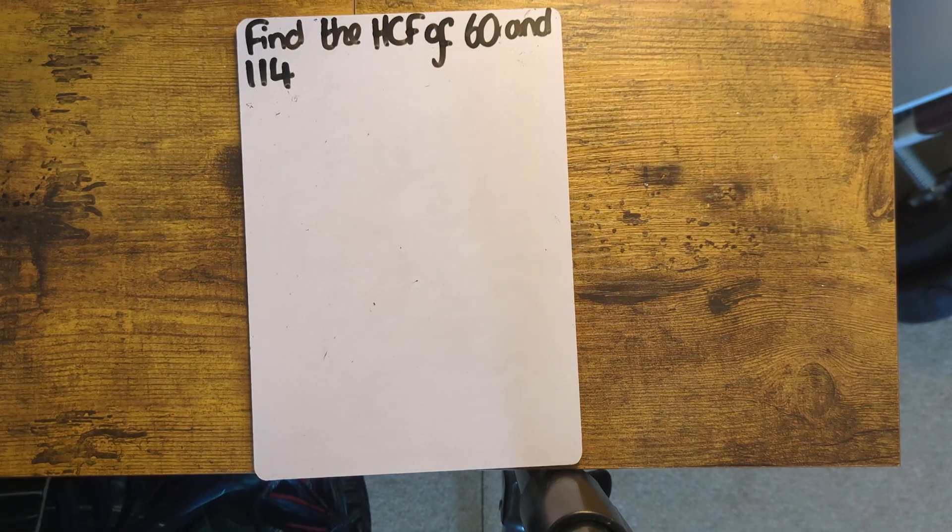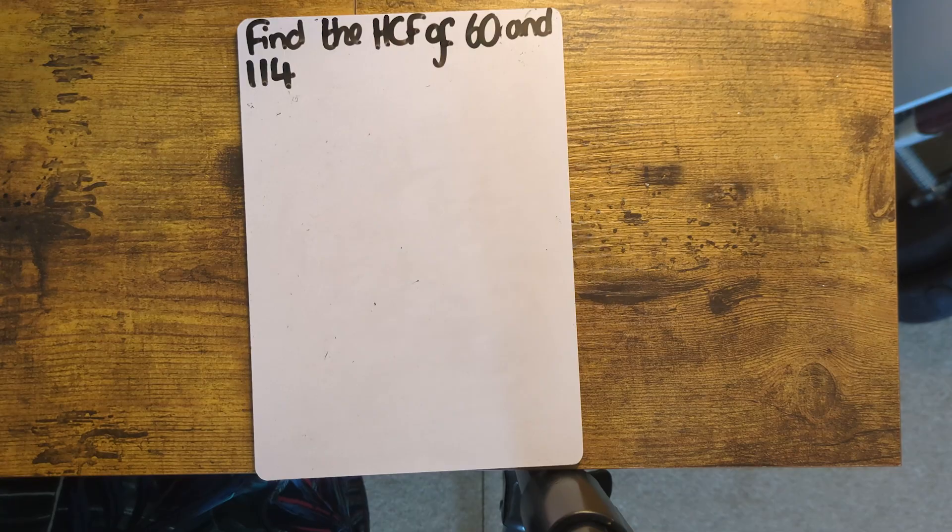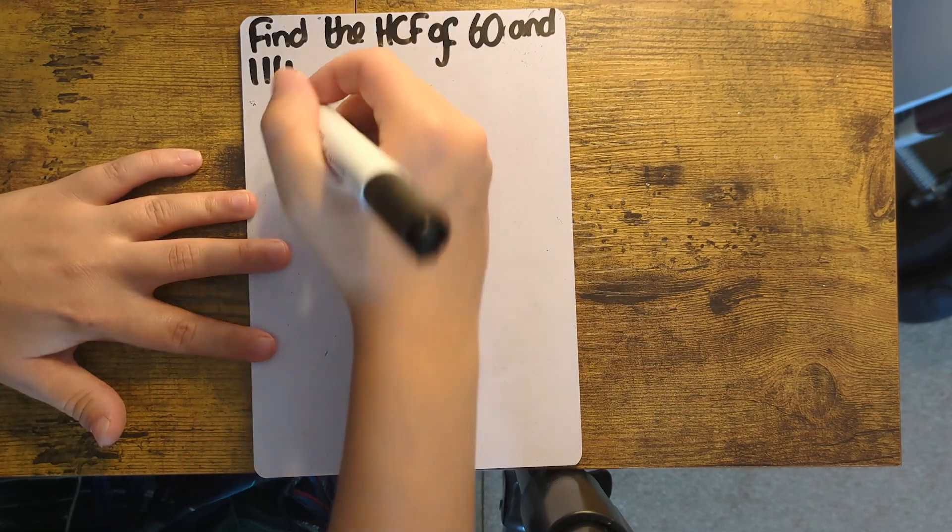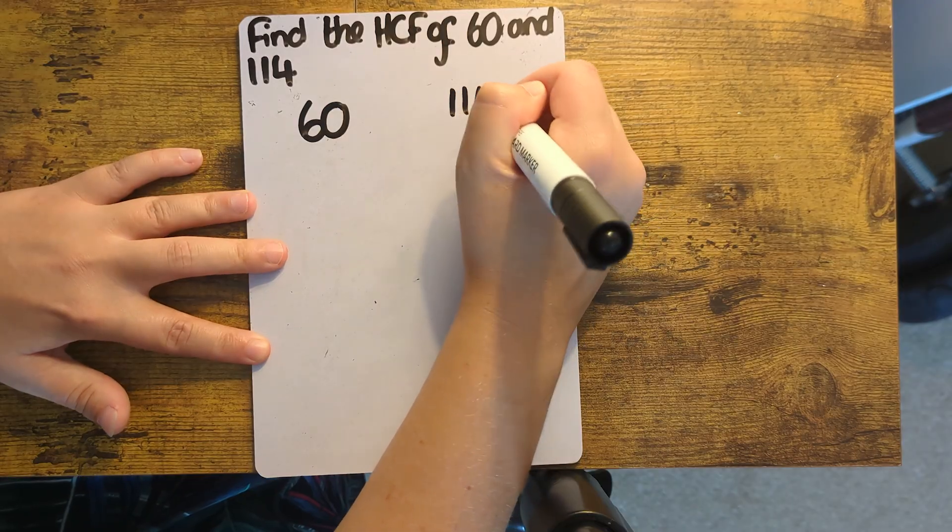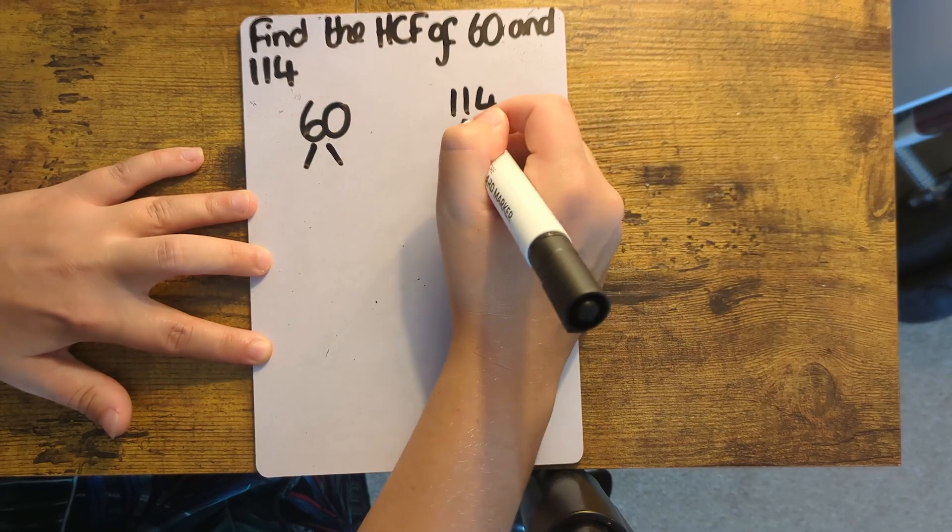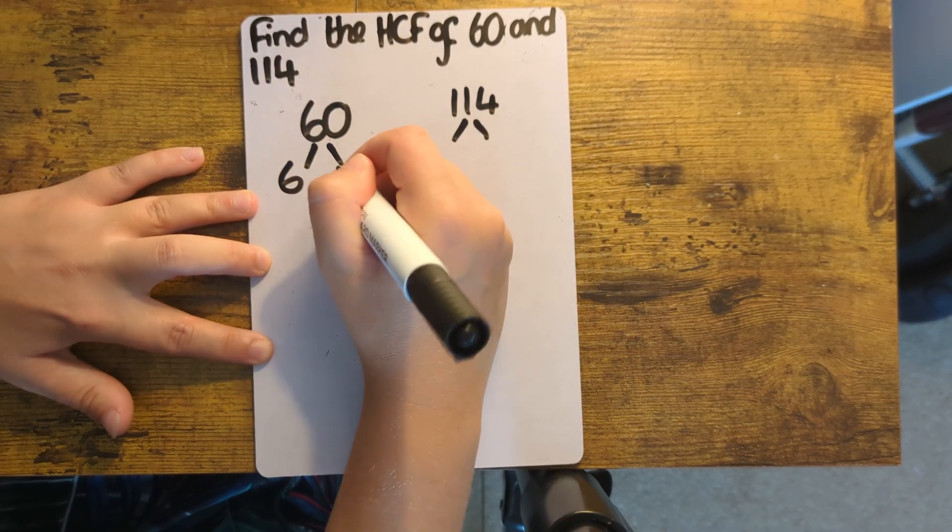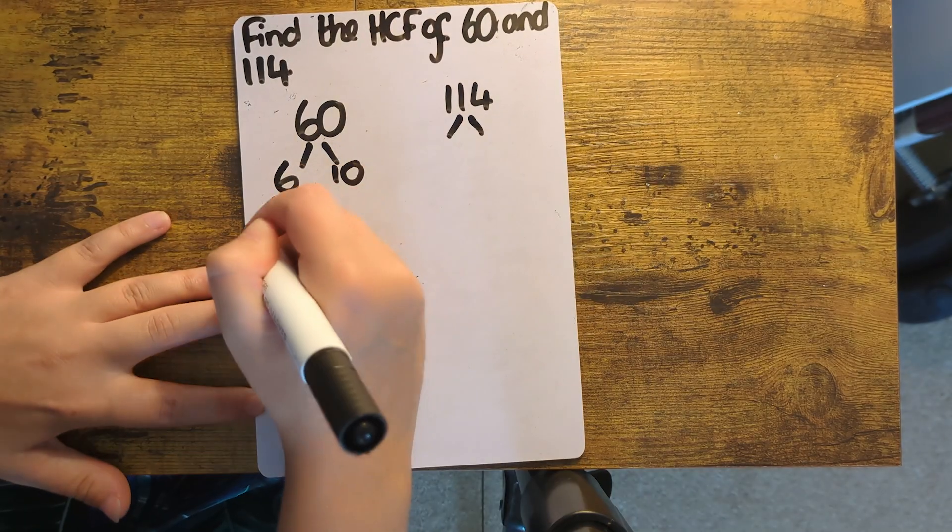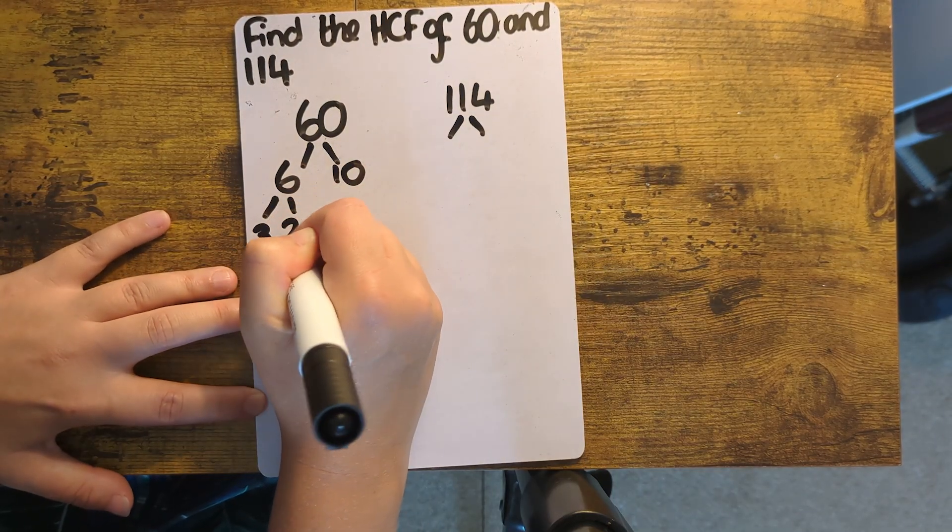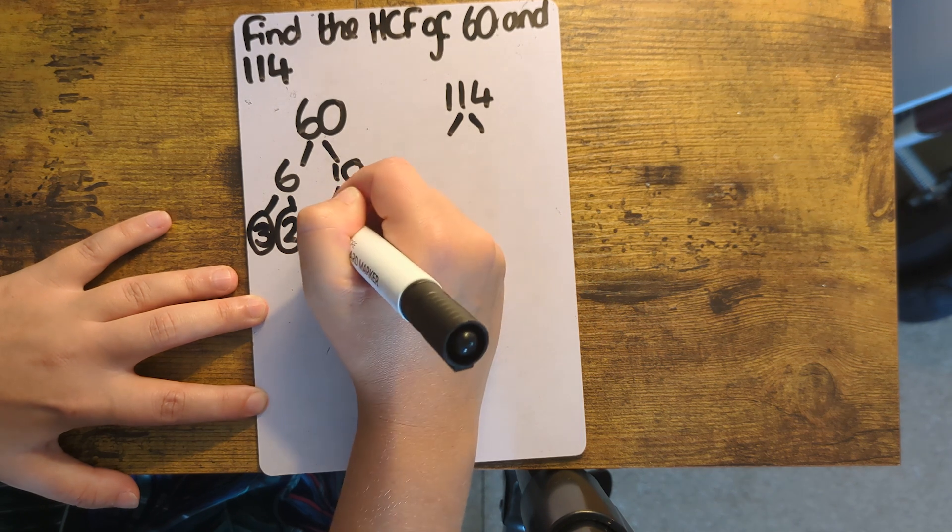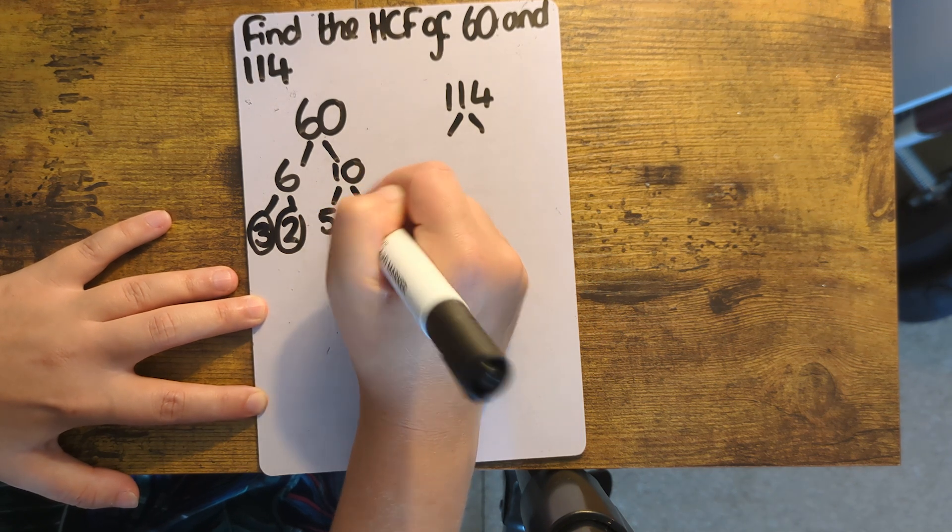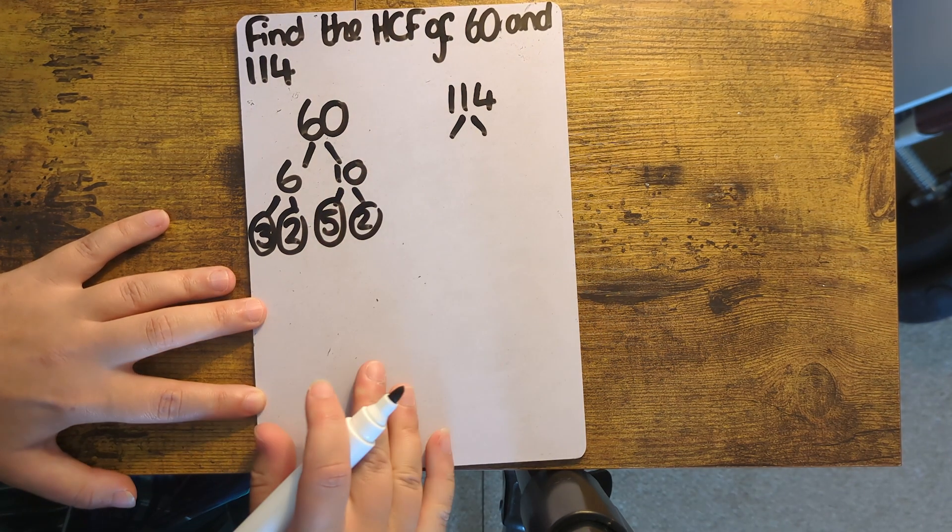So for this last one, we're finding the highest common factor of 60 and 114. I'm starting by doing the factor tree for 60. Now for the 114.